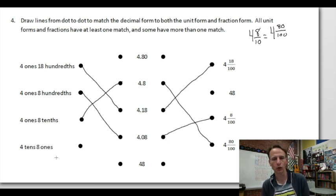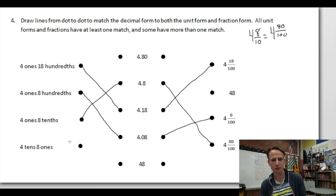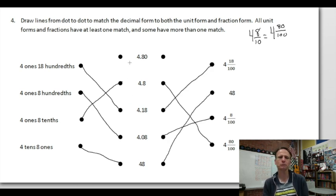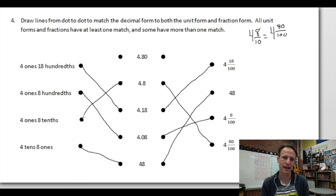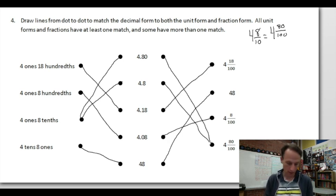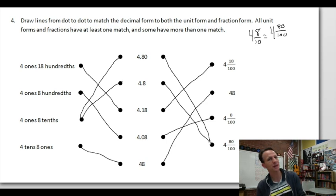Four tens, eight ones: there's no decimal, no fractional part. Four in the tens place is 40, plus eight ones is 8 — that's 48. In decimal form it's 48, and in fraction form it looks the same. Now we're left with 4.80 — four and eighty hundredths. We figured out that's equivalent to four ones and eight tenths, so that line connects there too. You've done it! We completed another homework time — congratulations! I'll see you next time.